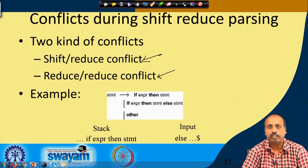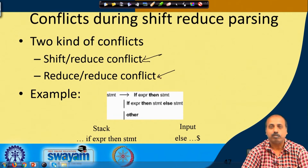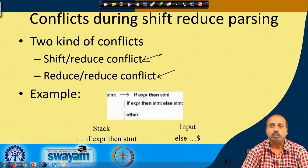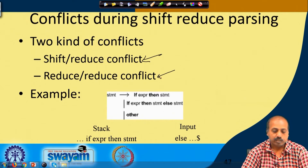There is nothing like a shift-shift conflict, and shift-accept or reduce-accept conflicts also cannot occur because we are already in the accept state, so there is no further action to be taken.